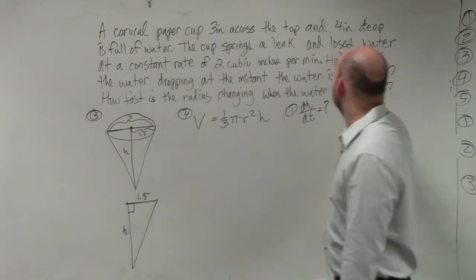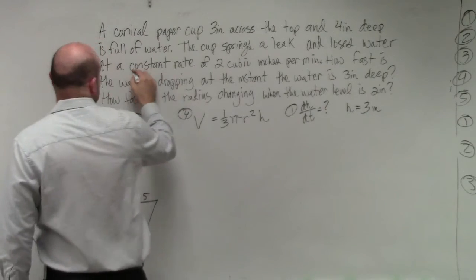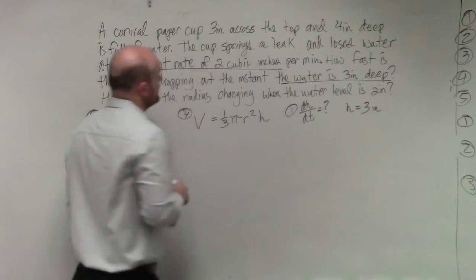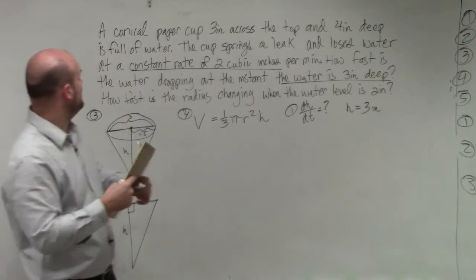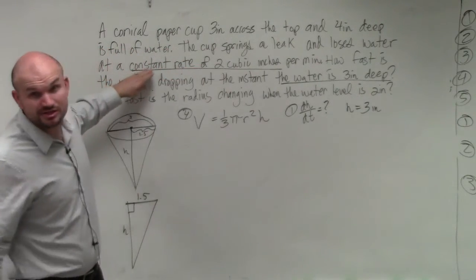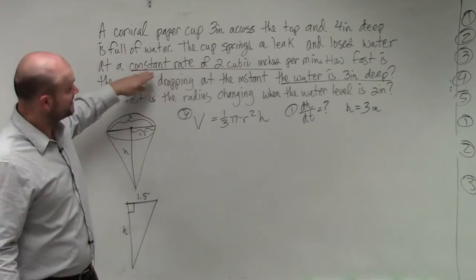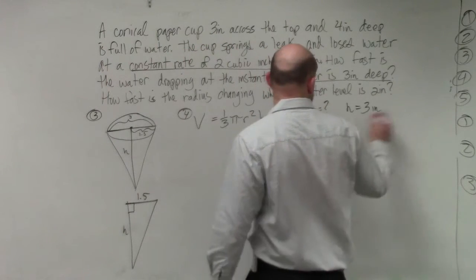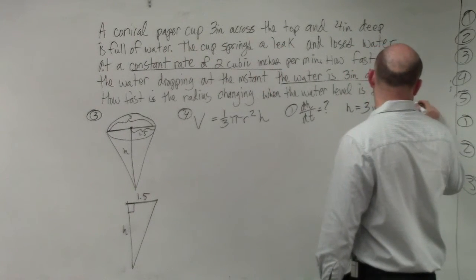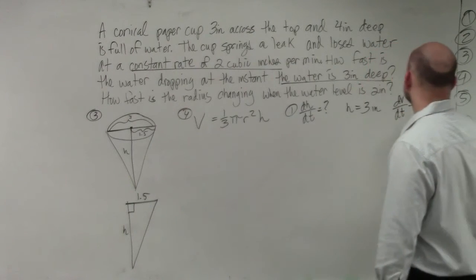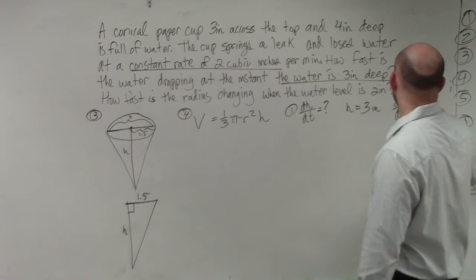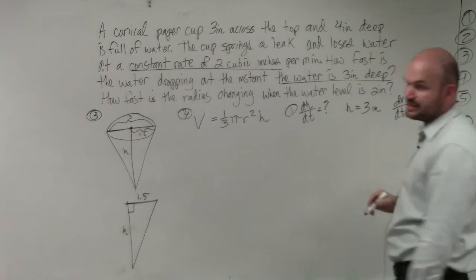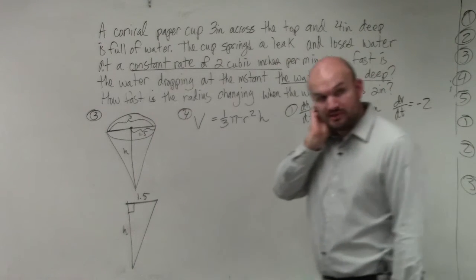And then the next question is, how fast is the radius? So that's a different question. So let's deal with this first question first. So we're given h. We want to find dh/dt. And h equals 3. And we also have it loses at a constant rate of 2 cubic inches. So we know that the cup springs a leak and loses water, which is going to be the volume. So we could say that dv/dt is going to equal negative—that's going to be 2 cubic inches. But since we're losing it, we're going to have negative 2 cubic inches.